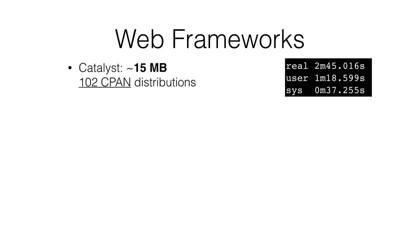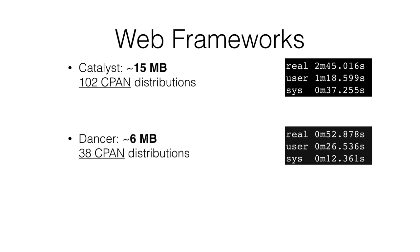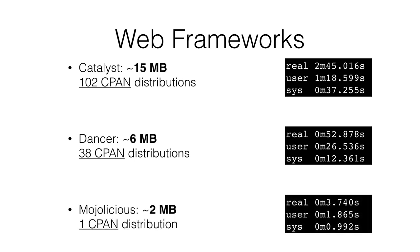Catalyst weighs in at about 15 megabytes, uses 102 CPAN distributions, and on my 2014 laptop I can install it in under three minutes. Dancer, another popular Perl framework, is almost a third that size and installs in under a minute — 36 to 38 CPAN distributions. Mojolicious is about two and a quarter megabytes and installs in three seconds on my laptop. Keep that two-megabyte number in mind.